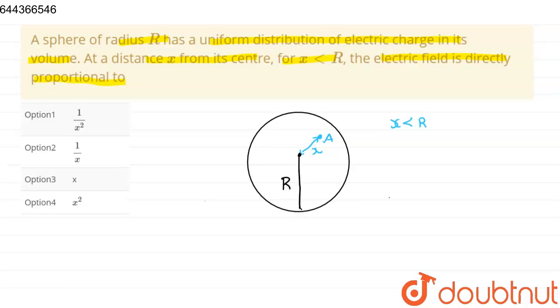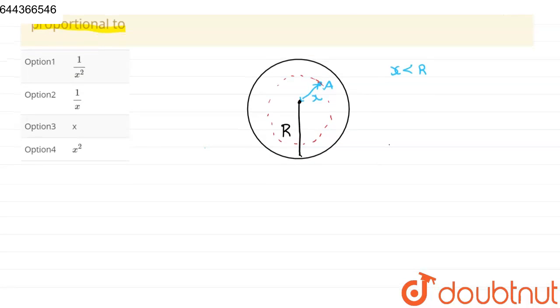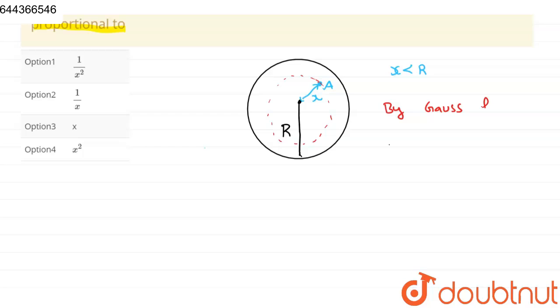Suppose this is an imaginary Gaussian surface. By Gauss law, we know the integration of E dot dS equals q over epsilon naught.